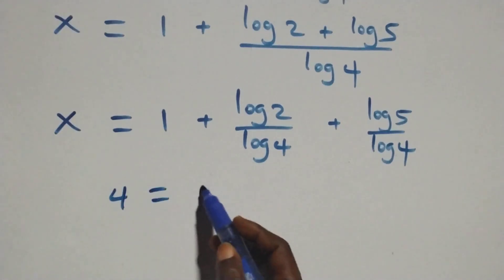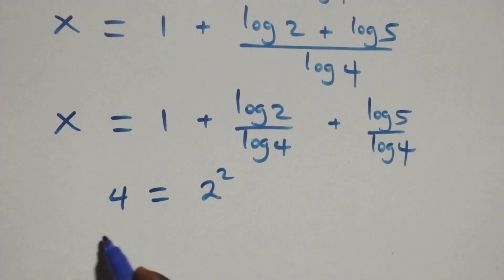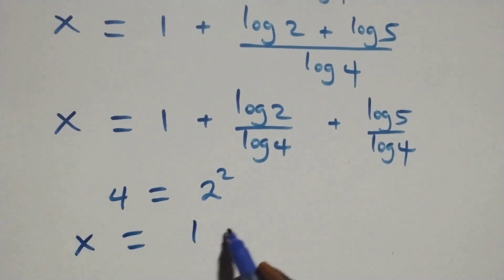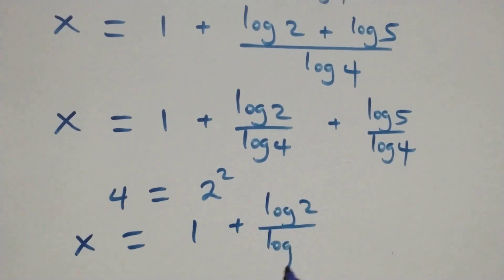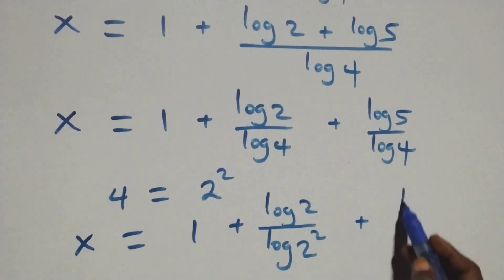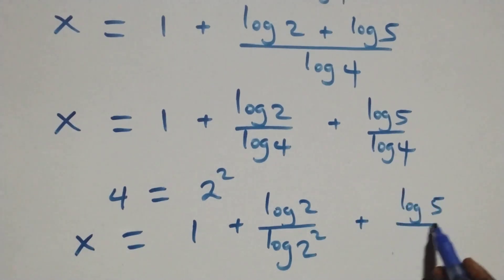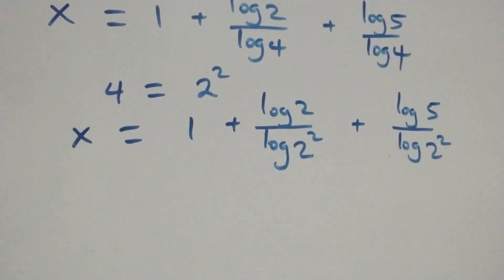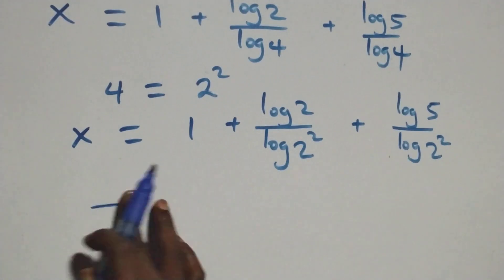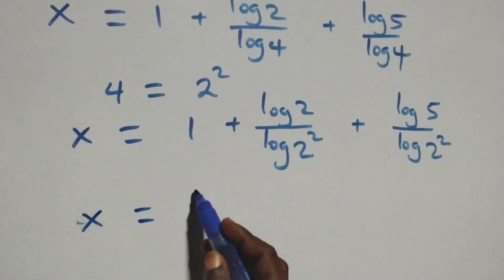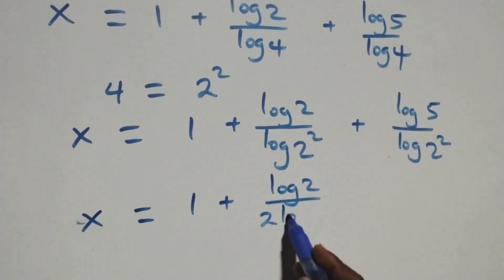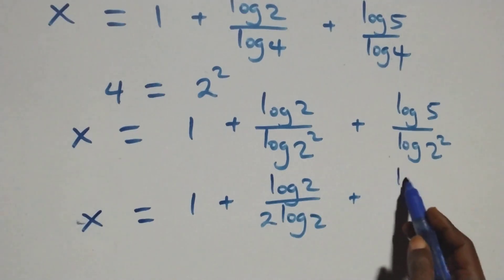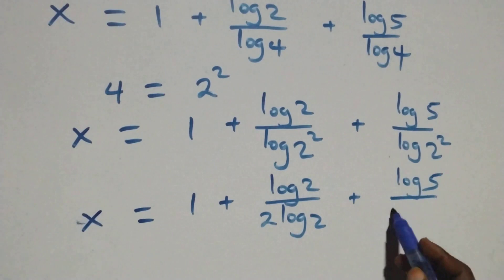Then here, 4 can be expressed as 2 times 2, that is 2 squared. So what we have becomes x equals to 1 plus log 2 over log(2 squared) plus log 5 over log(2 squared). Applying the power rule on log(2 squared), we get x equals to 1 plus log 2 over (2 log 2) plus log 5 over (2 log 2).